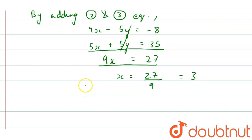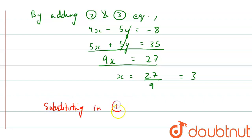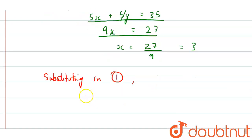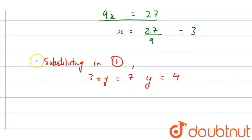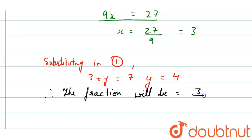So we have x as 3. Now, substituting 3 into equation 1, we get 3 plus y equals to 7, so y equals 4. Therefore, the fraction will be 3 by 4. This is the answer for this question.